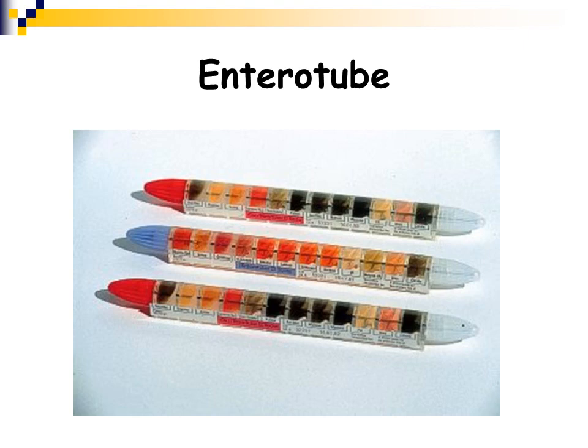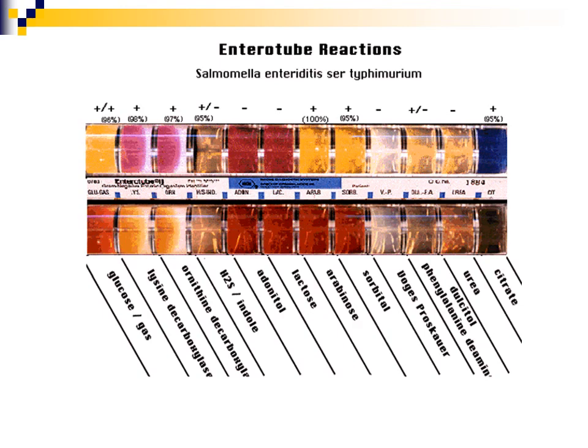With the instruments, you don't have to manually read these tests anymore. But if the instruments go out, you have to do some of these tests. The entero tube does glucose fermentation, hydrogen sulfide production, indole, different types of carbohydrate fermentation including lactose, arabinose, sorbitol, the Voges-Proskauer test, urea, PDA, and citrate. These commercial kits are doing all these different test reactions in one single tube.